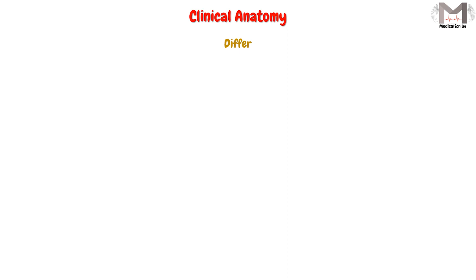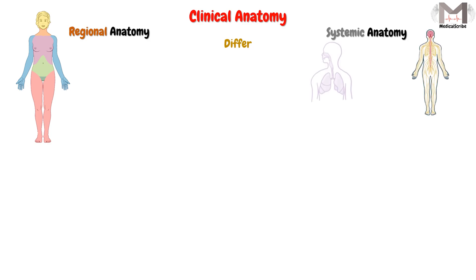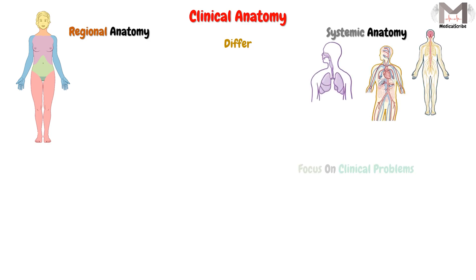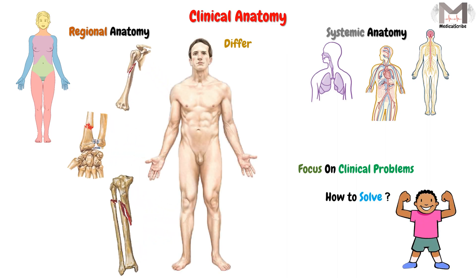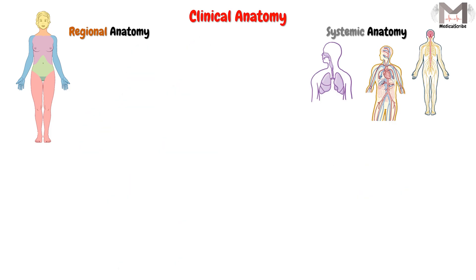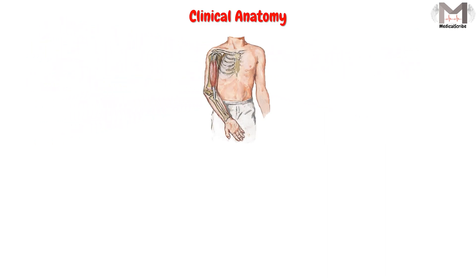Clinical anatomy differs from the previous two approaches — the regional anatomy and the systemic anatomy approach — because it will focus on the clinical problems which occur in the human body and how to solve them. It will incorporate both the regional anatomy approach and the systemic anatomy approach, focusing on the clinical aspect mostly.